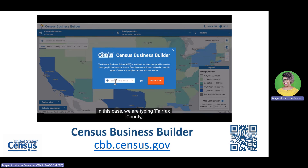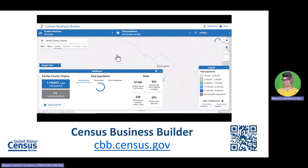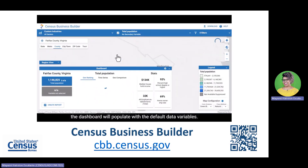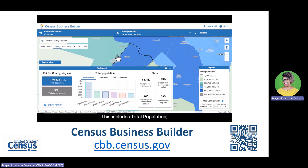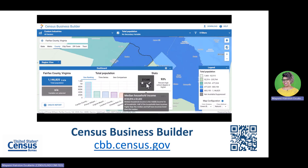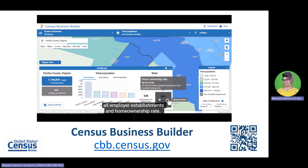In this case, we are typing Fairfax County, Virginia into the search box. Once you've selected your geography, the dashboard will populate with the default data variables. This includes total population, median household income, percent high school degree or higher, all employer establishments, and home ownership rate.